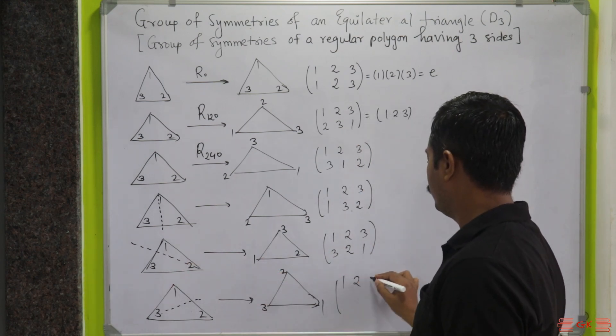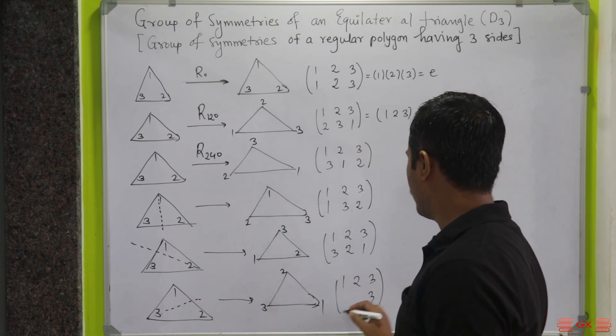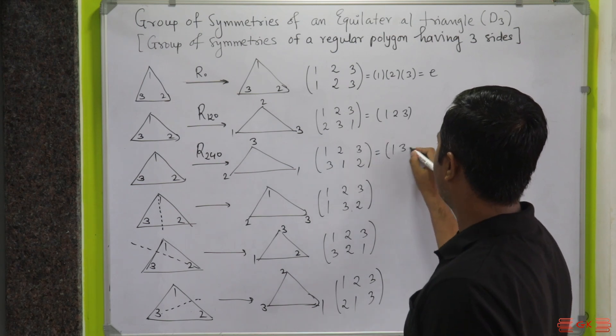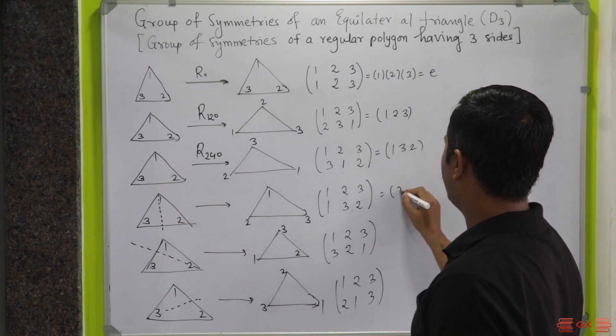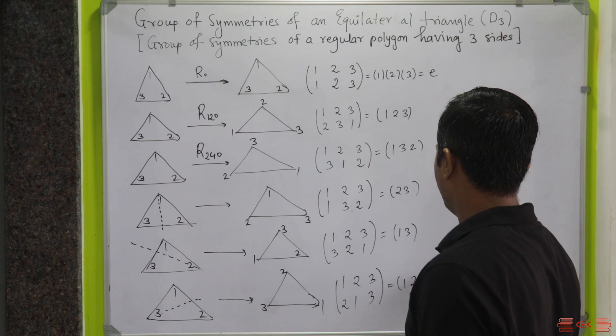Over here, one is mapping to three, and three is mapping to one. Three is mapping to three, one is mapping to two, and two is mapping to one. After writing in cyclic form, this will be (1,3,2), this will be (2,3), this will be (1,3), and this will be (1,2).